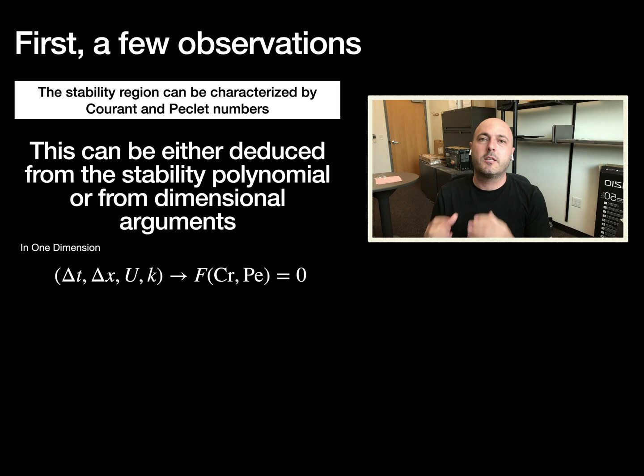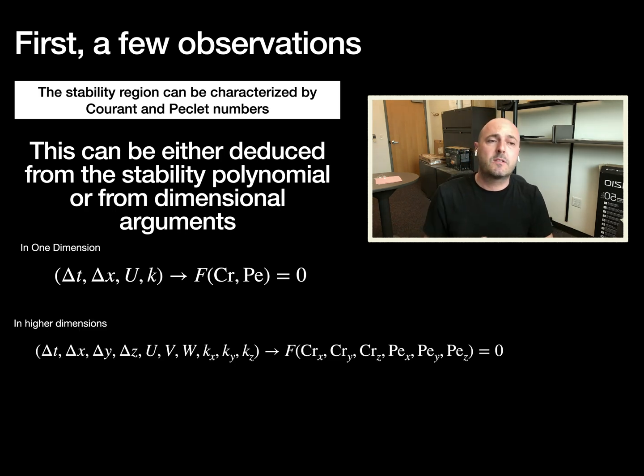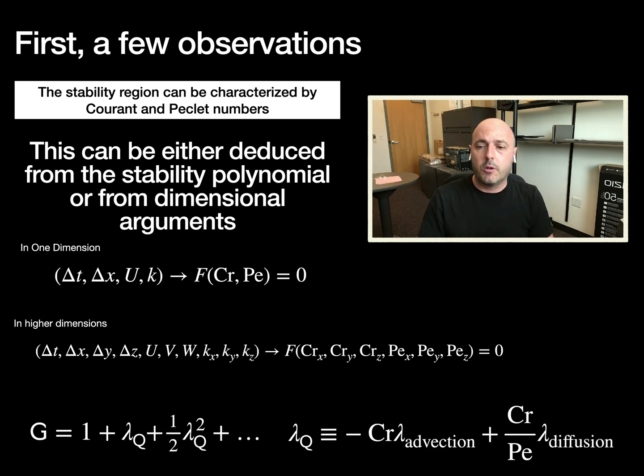Remember, our objective is to apply these formulas to Navier-Stokes solvers. In three dimensions, things become a little bit more complicated because you have more dimensionless parameters. We discussed this in the paper, but here we will focus on the 1D case. Similarly, from the stability polynomial, you can easily extract the Courant number and the Peclet number.